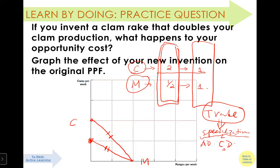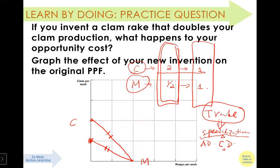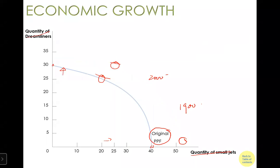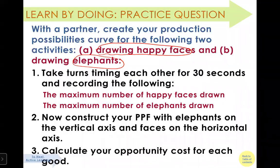To understand specialization, I will explain to you absolute advantage versus comparative advantage. Comparative advantage gives us specialization, and furthermore explains why we can benefit from each other through trade. That will be the main discussion for our next class. For today, I guess we will finish up here.